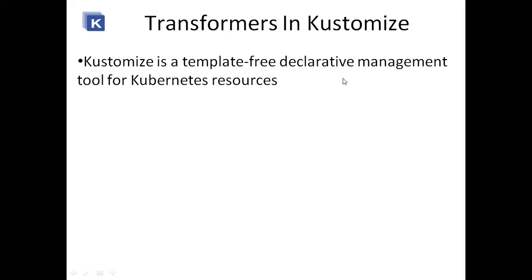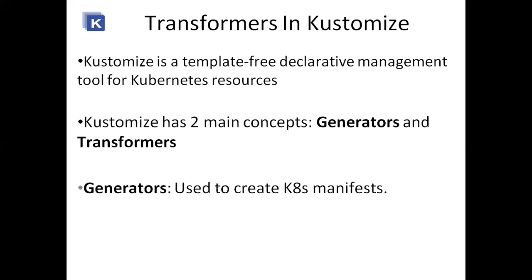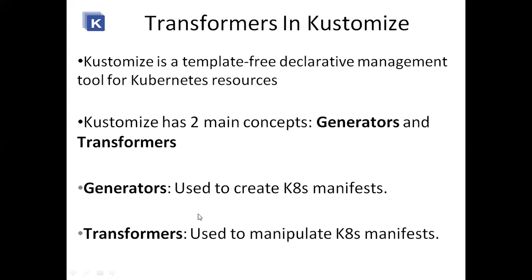With Kustomize we just declare the syntax and the declarative steps — that's it. We don't have to provide any expressions or annotations. Now Kustomize has two main concepts: generators and transformers. Generators are used to create Kubernetes manifests and transformers are used to manipulate those Kubernetes manifests. Transformers modify the Kubernetes manifest while generators create it.